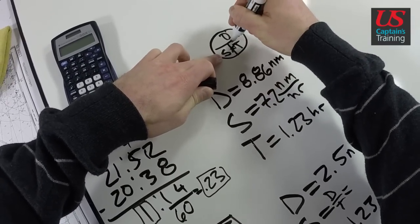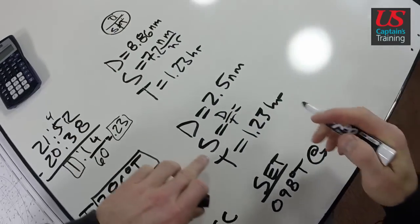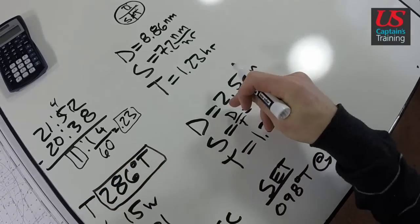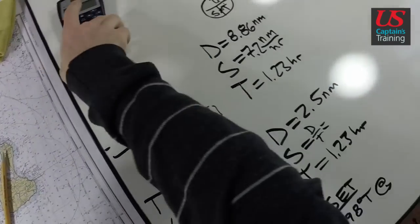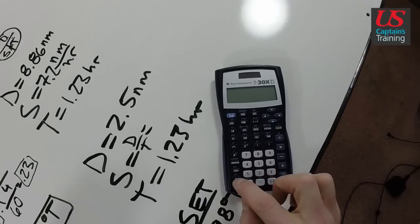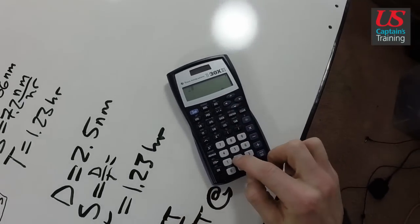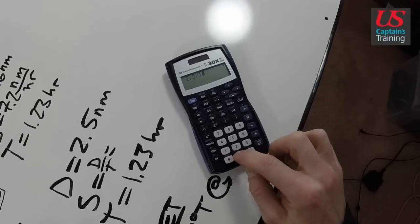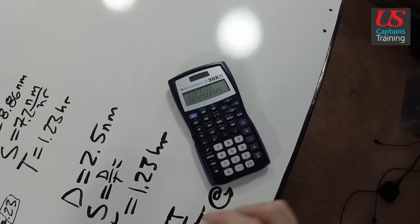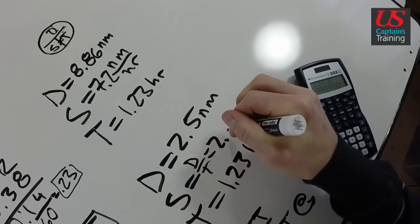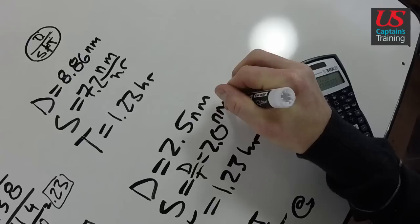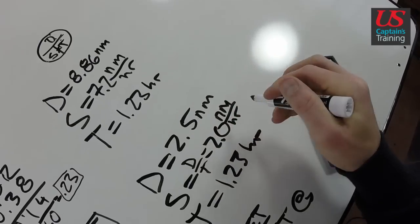So distance over time. We got 2.5 divided by 1.23. Here we go. On our calculator, nautical miles per hour, or knots.